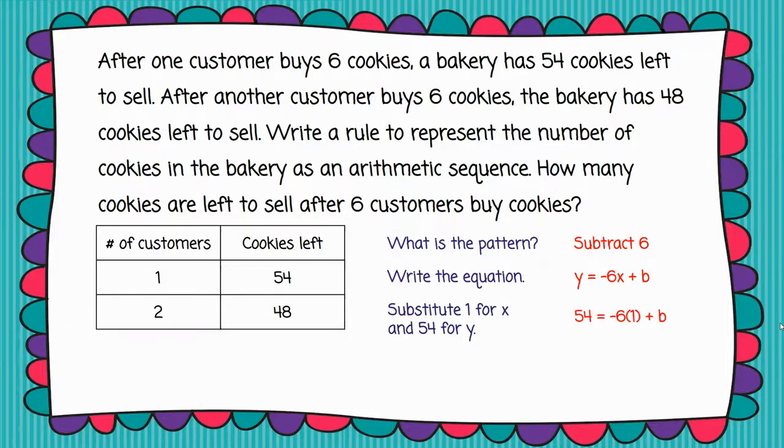That's going to look like 54 equals negative six times one plus that bonus amount. So you'll notice I put in 54 in place of y and I put in one in place of x.